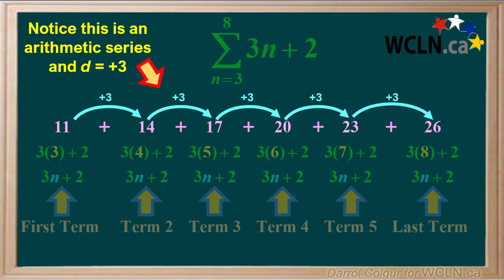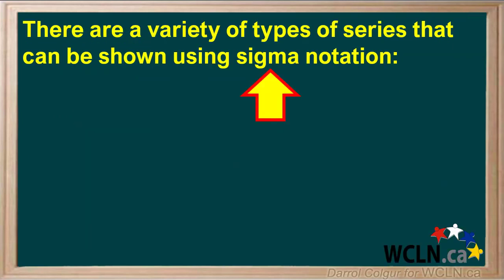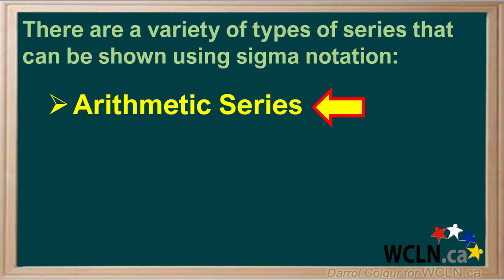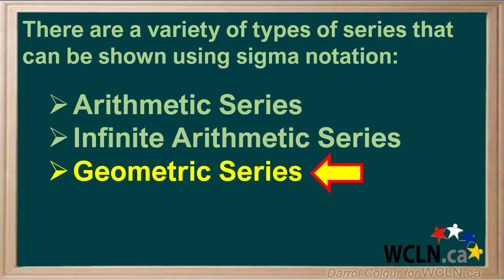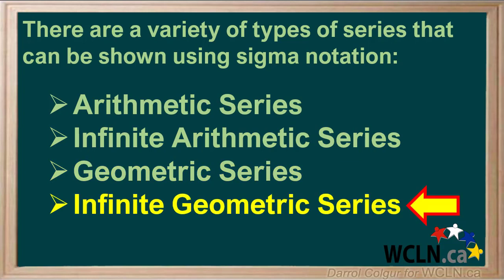Notice this is an arithmetic series, and the common difference d is equal to positive 3. There are a variety of types of series that can be shown using sigma notation. These include finite arithmetic series, infinite arithmetic series, finite geometric series, and infinite geometric series. We'll look at an example of each one of these types.